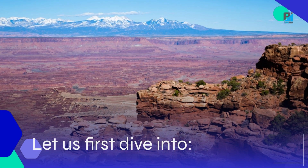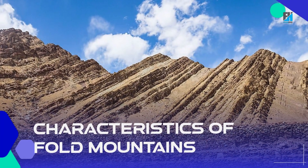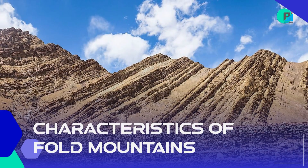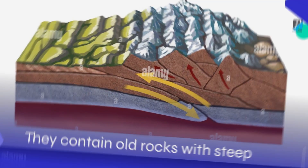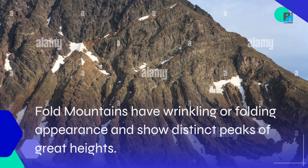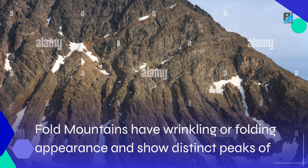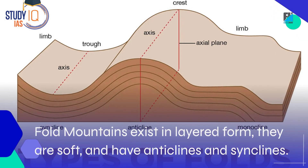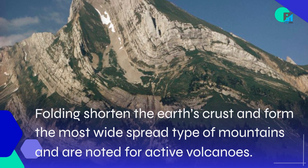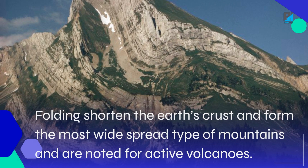Let us first dive into the characteristics of Fold Mountains. They contain old rocks with steep sides. Fold mountains have a wrinkling or folding appearance and show distinct peaks of great heights. They exist in layered form, they are soft, and have anticlines and synclines.